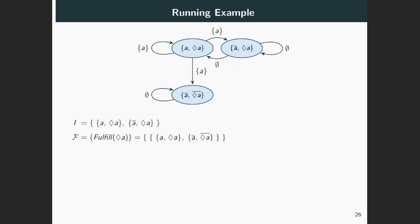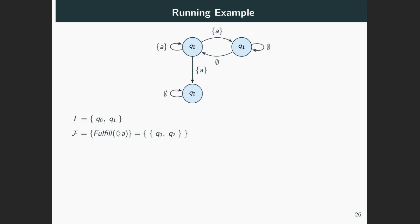Now let's bring in the initial states and the accepting states of this Büchi automaton into the discussion, and let's clean up things by writing Q0, Q1, and Q2 for its states. What is the generated language of this automaton — the language of eventually A? To accept words, we are allowed to start in either Q0 or Q1. What we must do is make sure that our run visits either Q0 or Q2 infinitely often. In other words, we should never settle to stay in Q1 during a run.